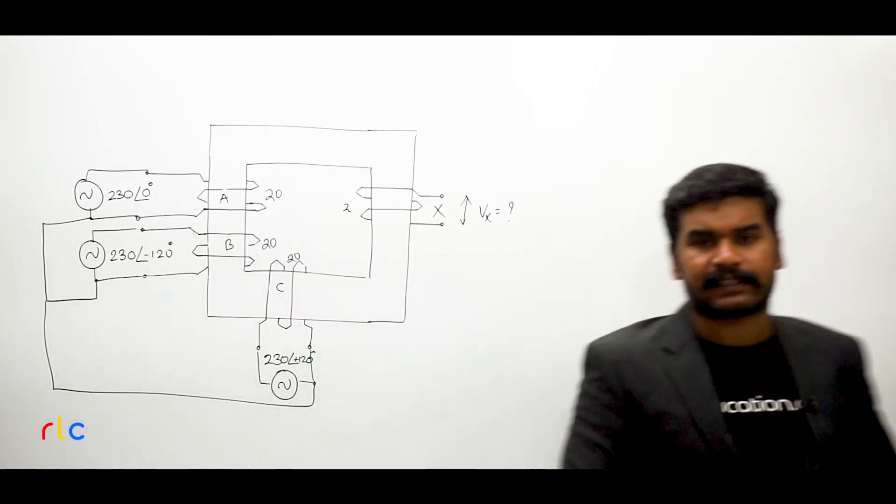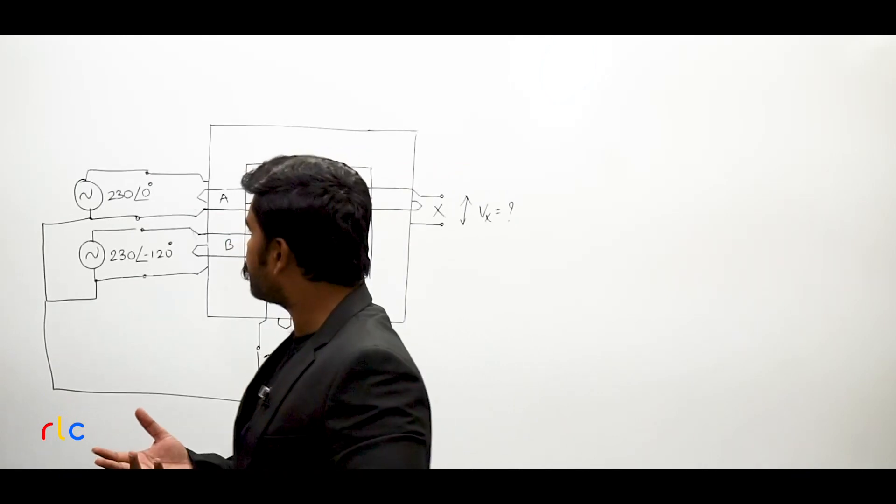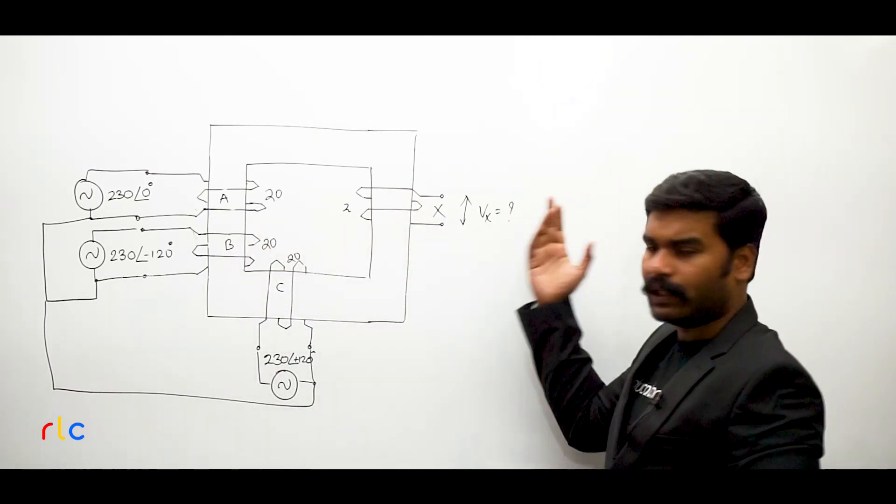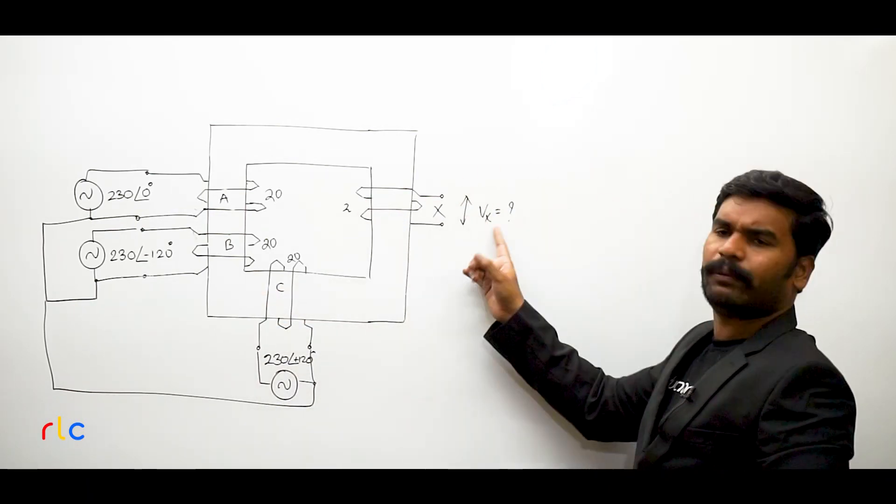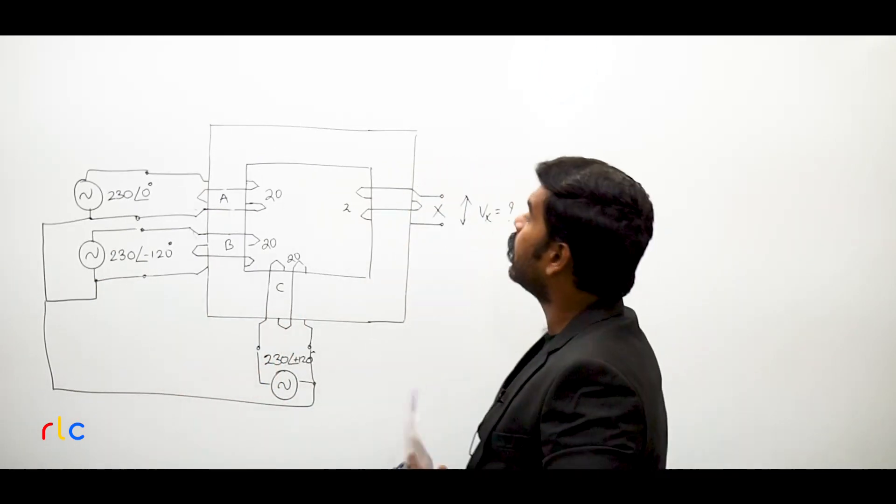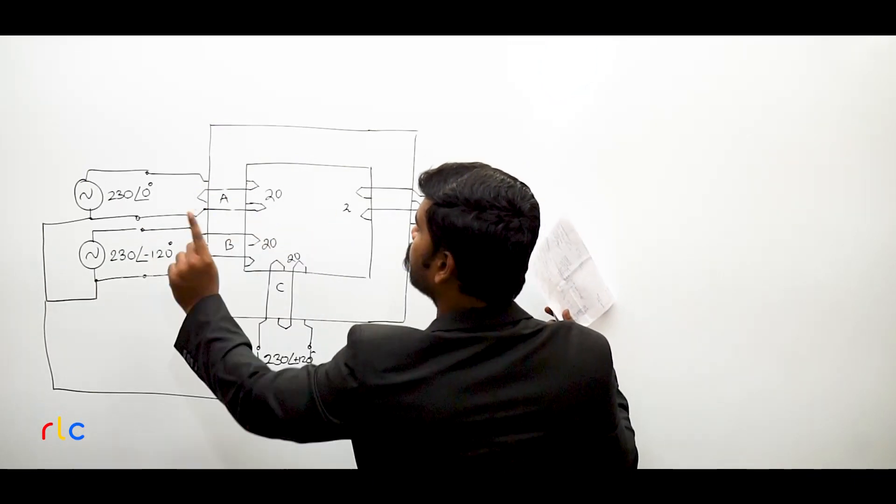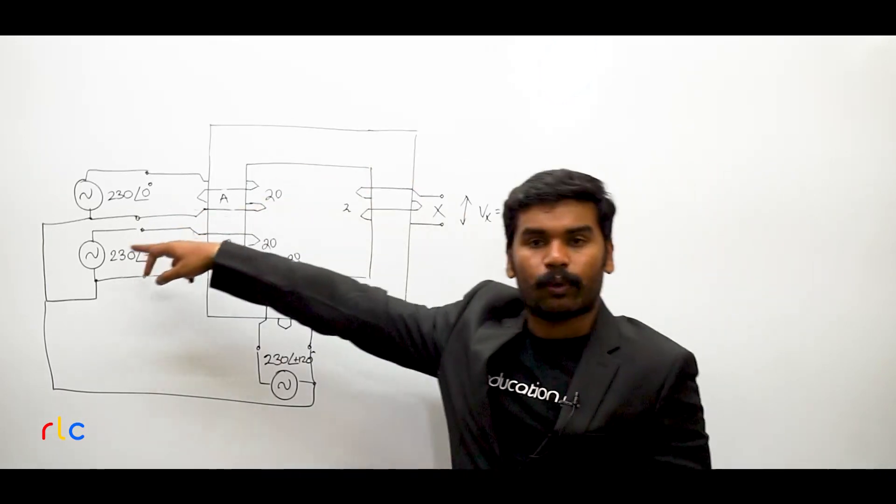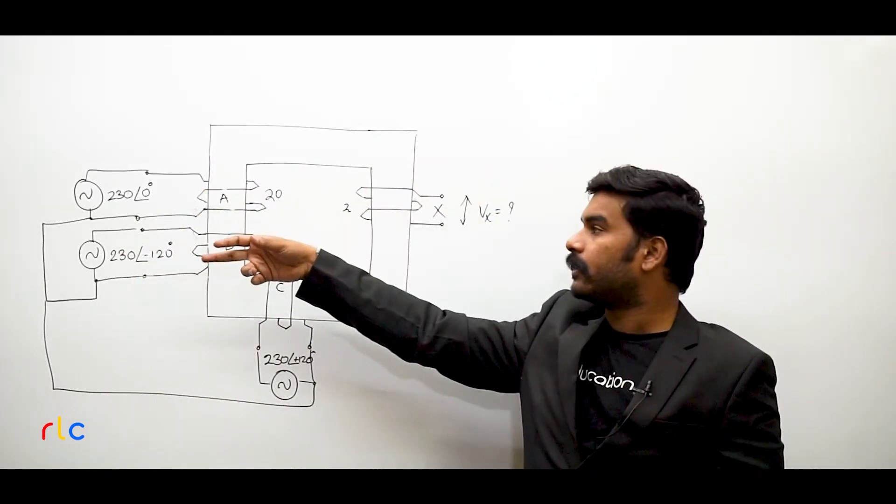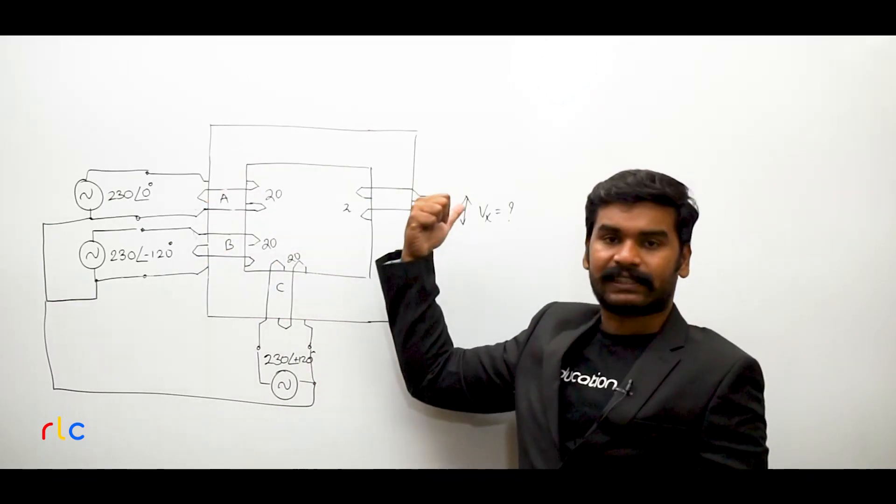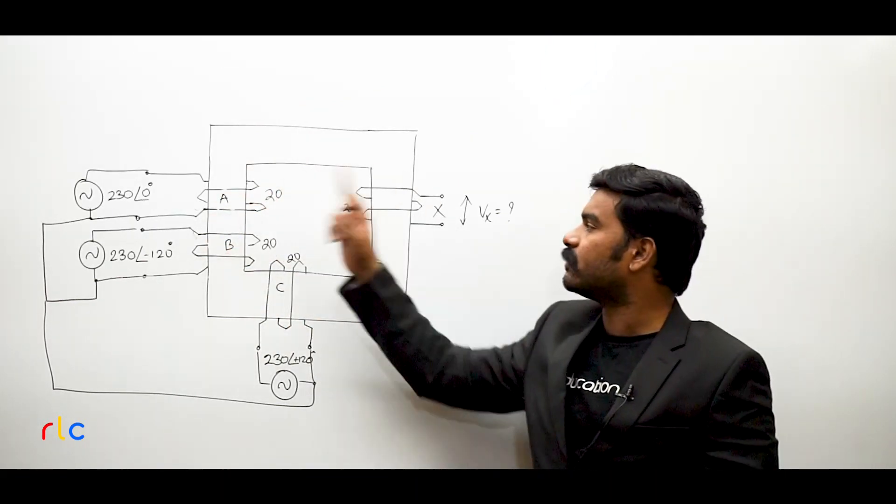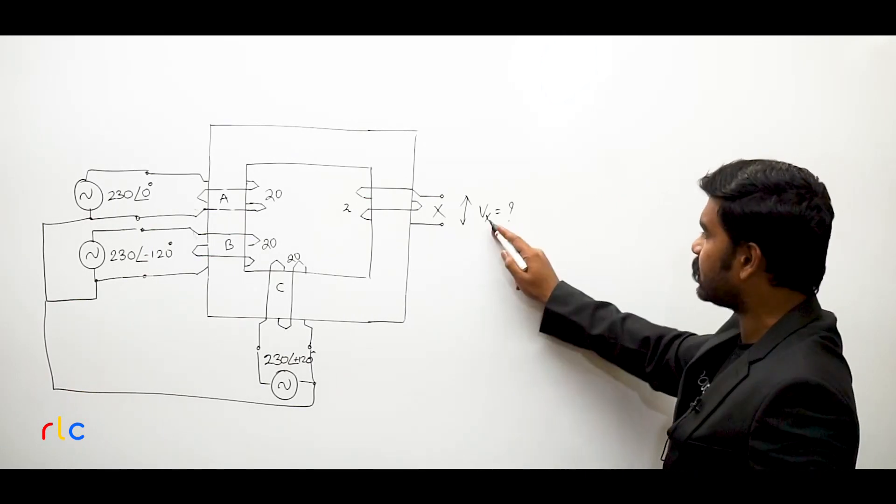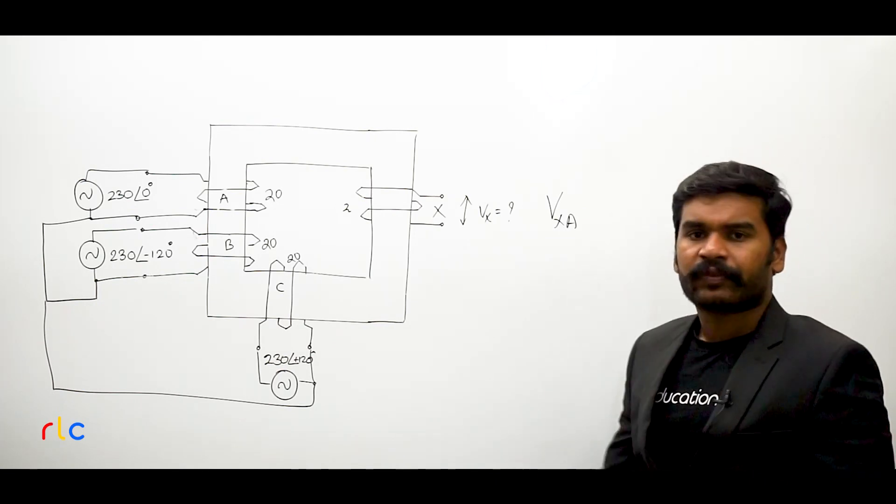We can solve this voltage VX by superposition. What we do is, first we will consider the existence of A and X, and then we will check what is the voltage. Next, only B and X, then C and X. The resultant voltage will be VX. If you look at winding A, the sense started from back and came front. X started from front and came back. When the winding sense is opposite on the primary side and secondary side, these windings are properly bounded according to Lenz's law principle. So if you are getting some EMF on the secondary side VX due to A, let's say that is VXA, that will be positive voltage.